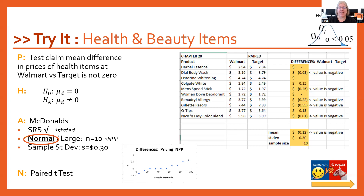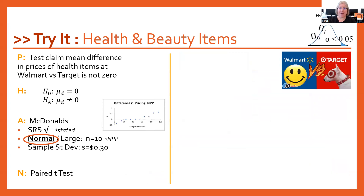Once you've done that, you can go to the data analysis package — the paired t-test is towards the bottom of the list. You just highlight the Walmart column and then the Target column and say okay. You'll get an output very similar to the one for the two-sample test.